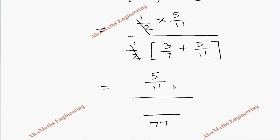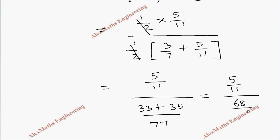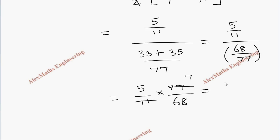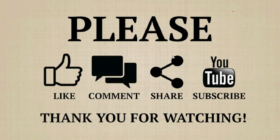Taking LCM of the denominator, the LCM is 77. So three by seven becomes 33 and five by eleven becomes 35, giving 68 by 77. The numerator is five by eleven. Taking the reciprocal and multiplying, we get five by eleven times 77 by 68. Canceling seven, the final answer is 35 by 68.